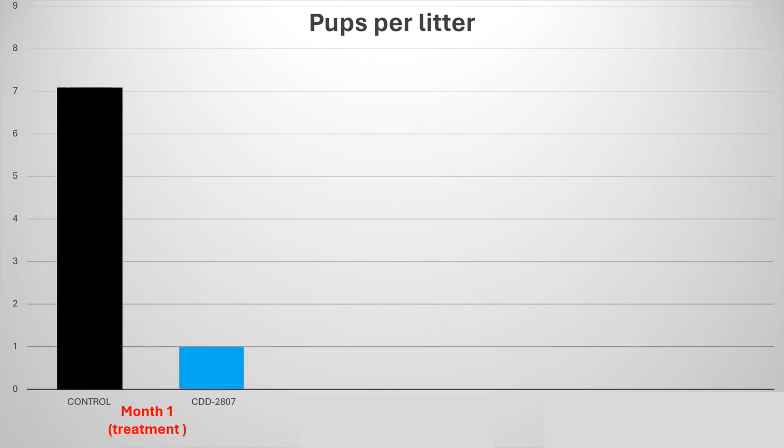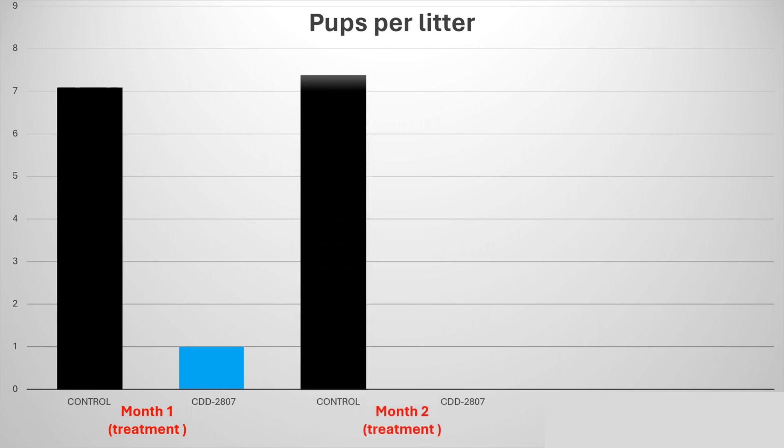In both protocols, CDD-2807 significantly reduced the number of pups after one month, and a complete contraceptive effect was achieved after month two.